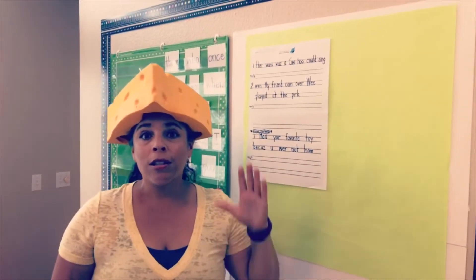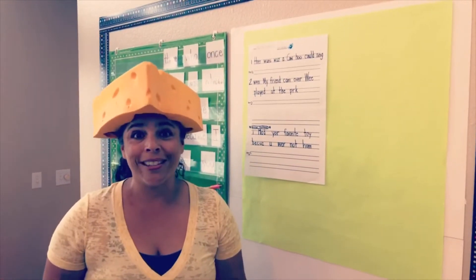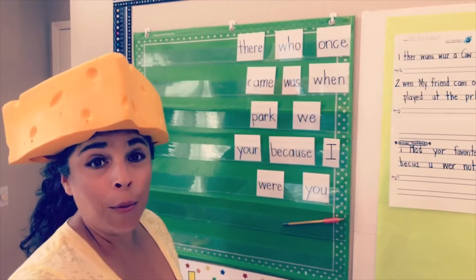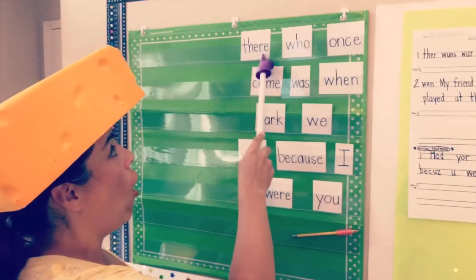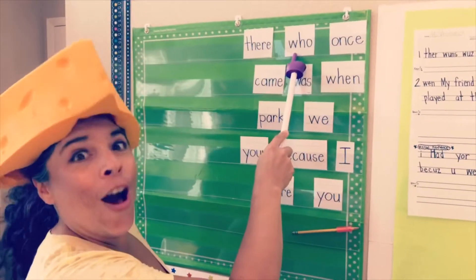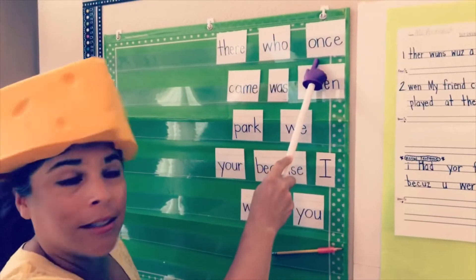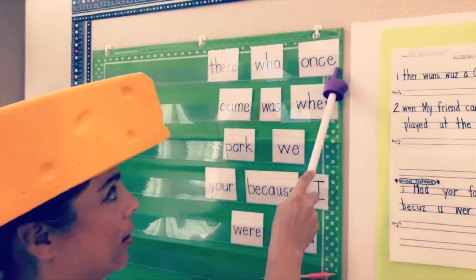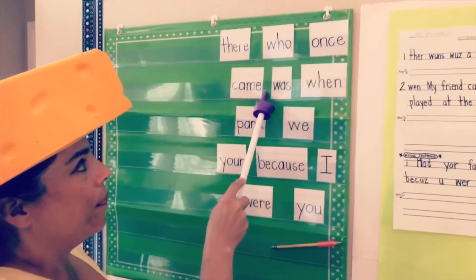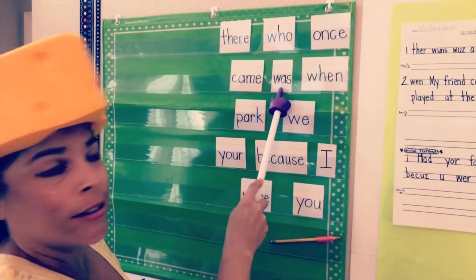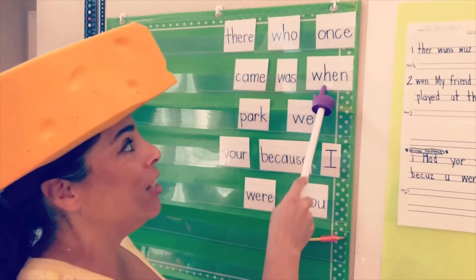First we need to talk about our sight words, or high-frequency words, that you might encounter in today's silly sentences. Sit with me: t-h-e-r-e, there. w-h-o, who. Once — o-n-c-e, once. c-a-m-e, came. w-a-s, was. w-h-e-n, when.